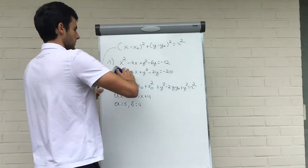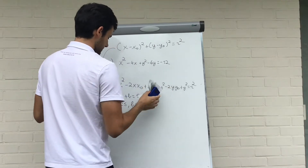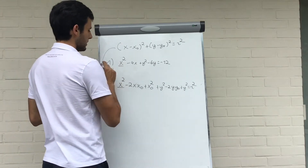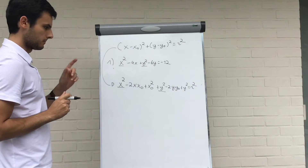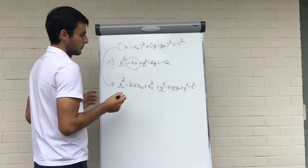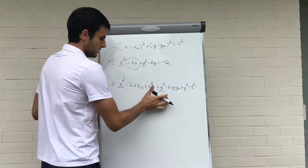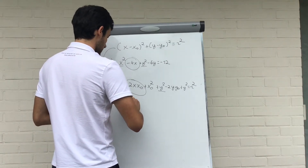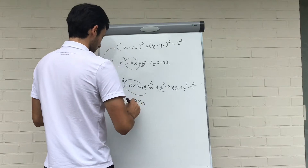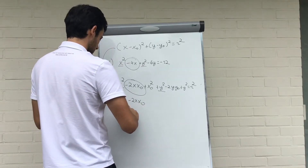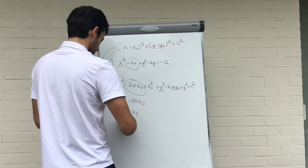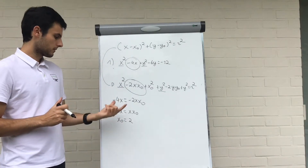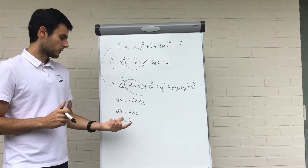So we're going to solve the first example. We see that x squared equals x squared, y squared equals y squared. Now, minus 4x is the only term with x here, and minus 2x·x₀ is the only term with x on the other side, so they must be equal. We get minus 4x equals minus 2x·x₀, or 2x equals x·x₀, so x₀ must be 2. We know that the x-coordinate of the center of our circle is 2.